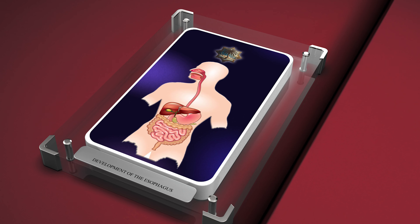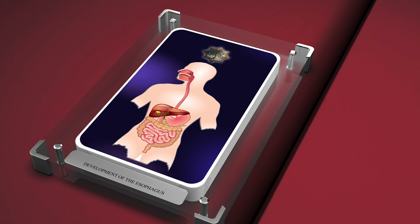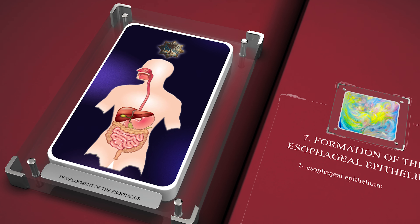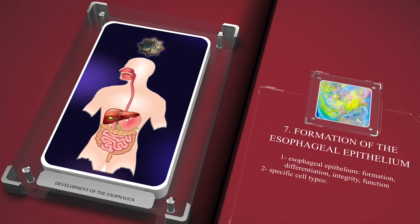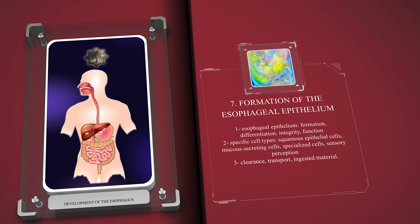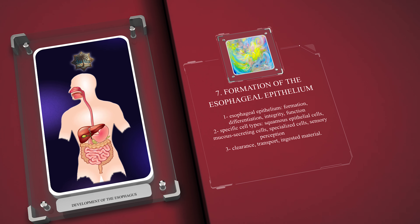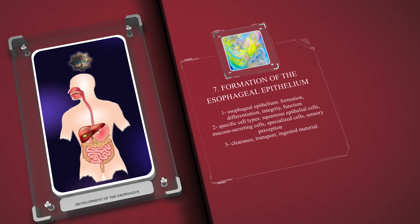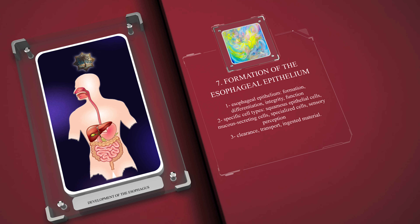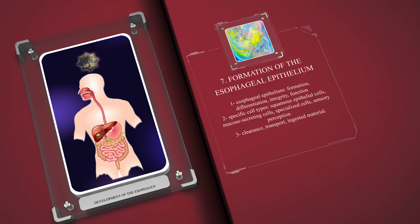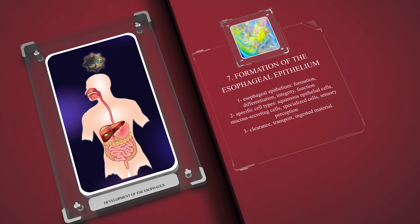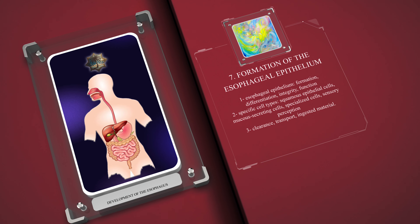The formation and differentiation of the esophageal epithelium are critical for the integrity and function of the esophagus. The epithelial lining undergoes specialized differentiation, with the development of specific cell types, such as squamous epithelial cells, mucus-secreting cells, and specialized cells for sensory perception. These cells collectively ensure the proper clearance and transport of ingested material.